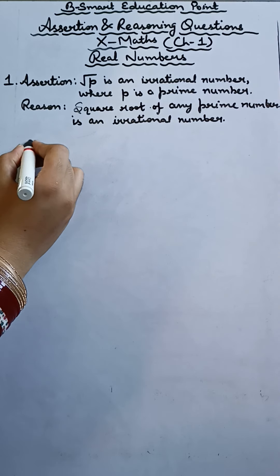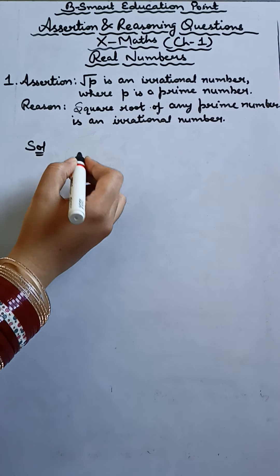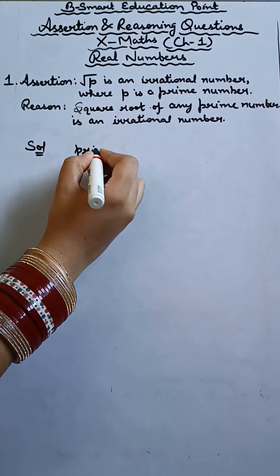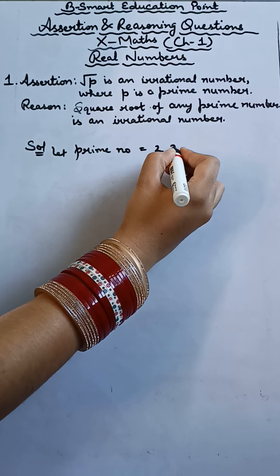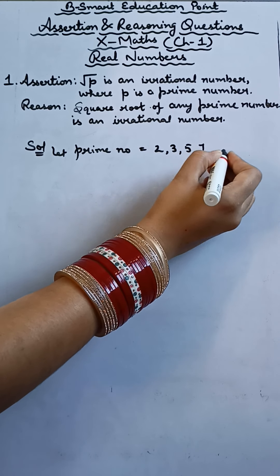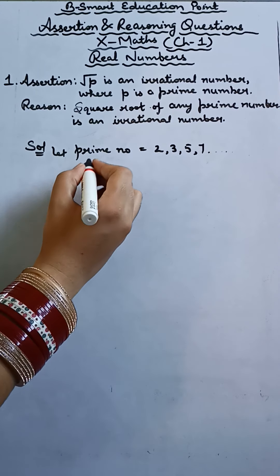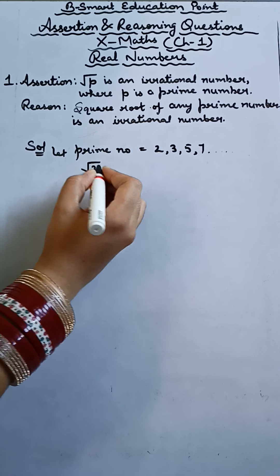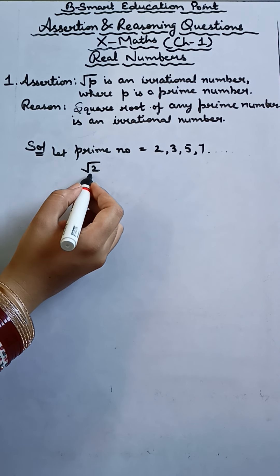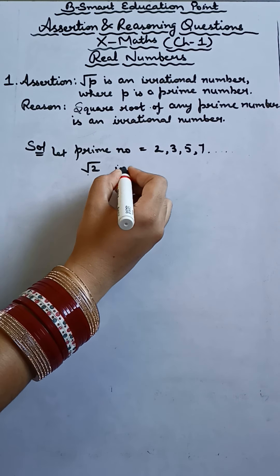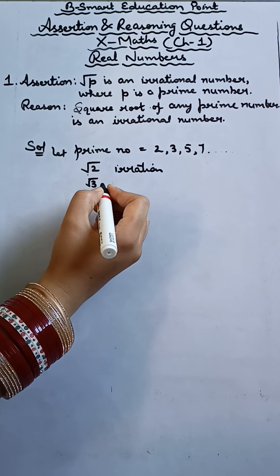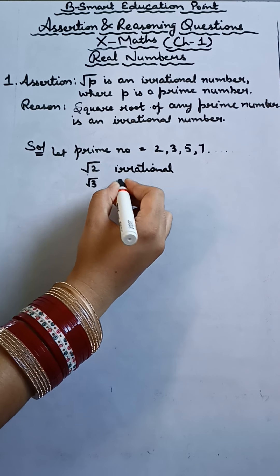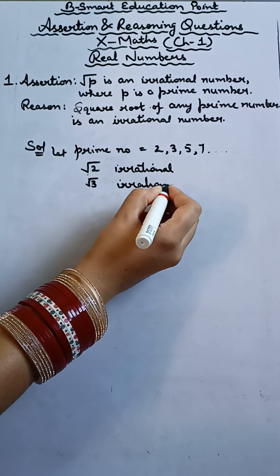Let's check by taking any prime number. The prime numbers — you can take 2, 3, 5, 7, and so on. Now just check: root 2 — is root 2 a rational number? No, it is an irrational number. Is root 3 rational? No, it is again irrational.